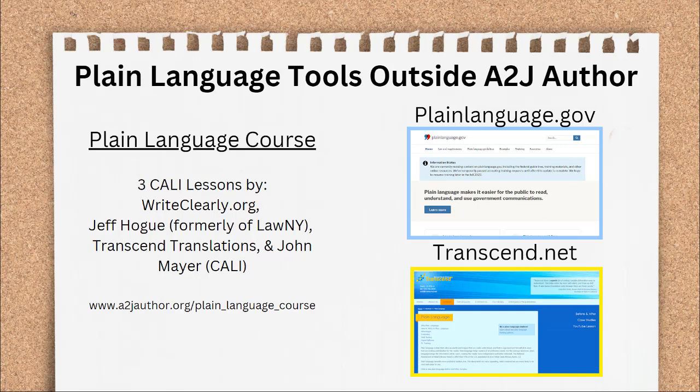There are also plain language tools outside of A to J Author. The plain language course is a series of three Kali lessons written by WriteClearly.org, Jeff Hogue formerly of Lonnie, Transcend Translations, and John Mayer from Kali — written using Kali Author, which is A to J Author's sister software. The project walks you through three lessons on plain language tailored for the legal aid and automated document communities, available at atoJauthor.org/plain_language_course. There's also plainlanguage.gov with checklists, examples, and guidelines applicable across the law. Finally, Transcend is a great company that has worked with many legal aid organizations and courts, offering articles on plain language, evaluations of court forms, discussions of advantages, and a plain language lesson on their YouTube channel.